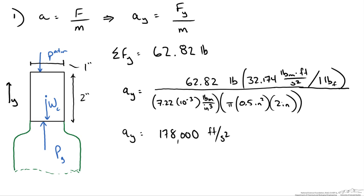To give a sense of magnitude, a bullet leaving a gun has an acceleration of roughly 1.3 million feet per second squared. So the cork is about an order of magnitude different from a bullet, but it does give you an idea that the pressure forces within carbonated bottles can produce some pretty high forces on these corks. Thank you.